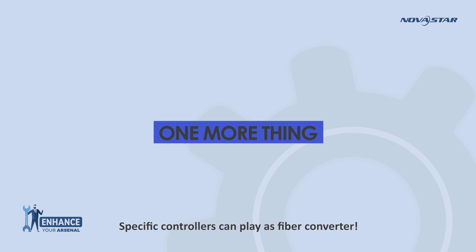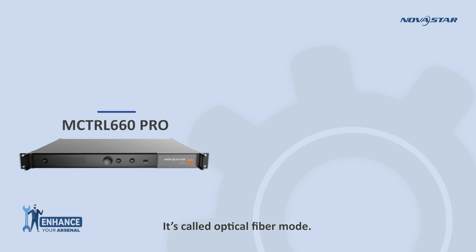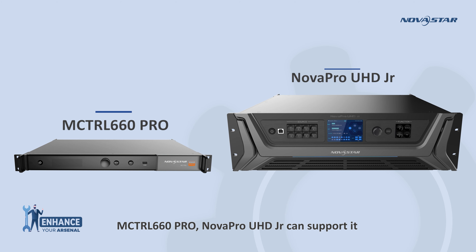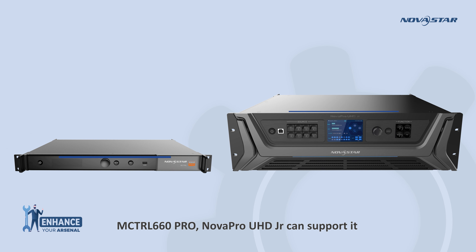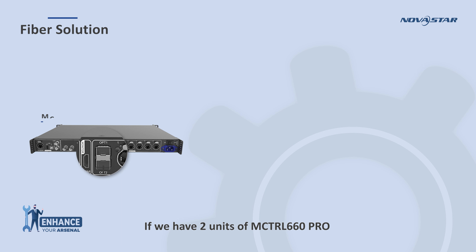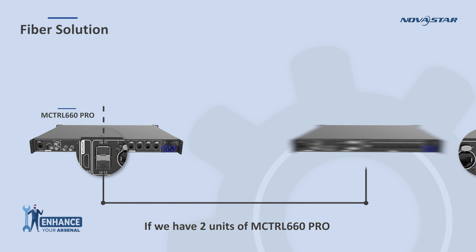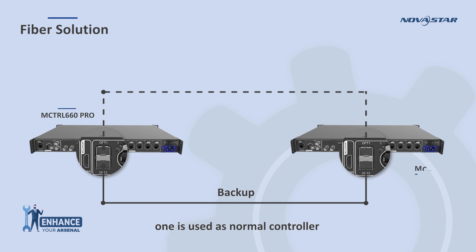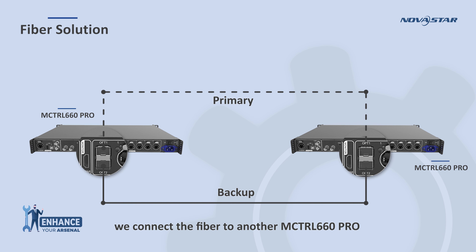One more thing — specific controllers can act as fiber converters themselves. We can use the fiber port as an input, which is called optical fiber mode. The M-Control 660 Pro and ProUHD Junior support it. If you have two units of M-Control 660 Pro, one is used as a normal controller, and we connect the fiber to the second M-Control 660 Pro, which will then work as a fiber converter — no need for a CVT4K or CVT10.